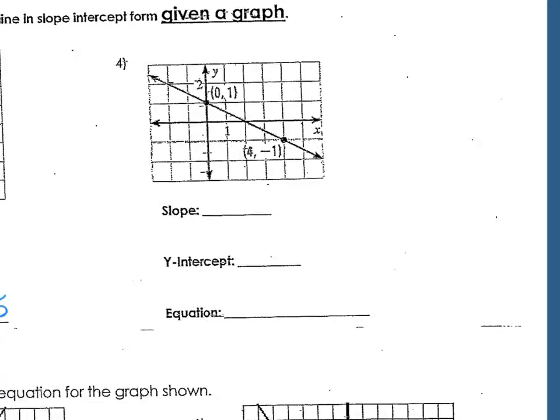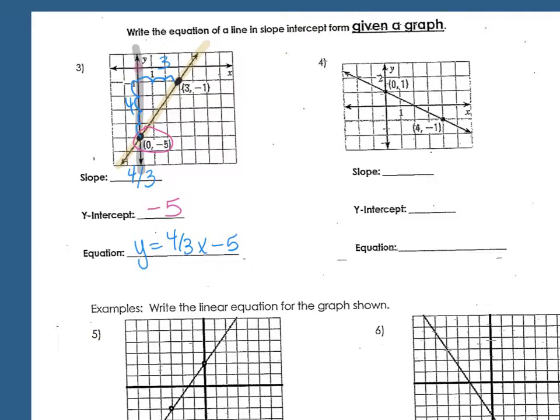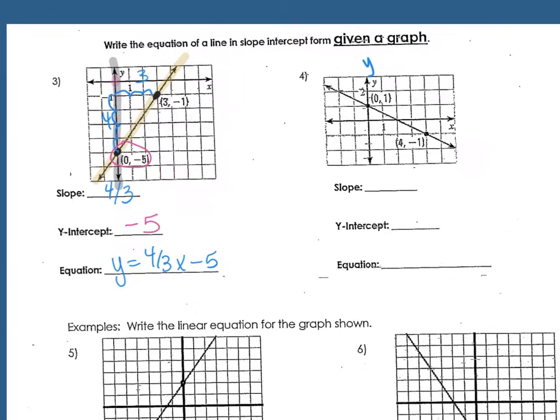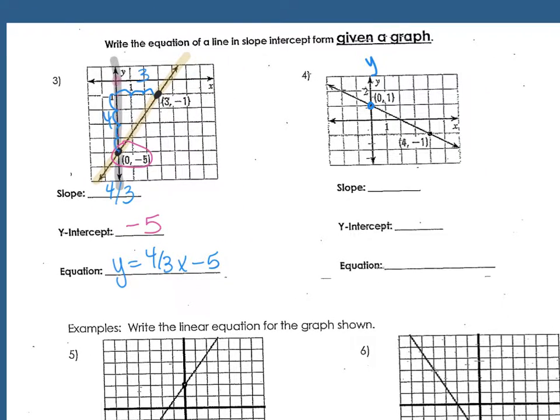Same thing on number 4. The first thing I want to find is the y-intercept. So where does your line cross that y-axis? 1. Positive 1. So I'm going to put that there.